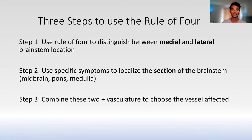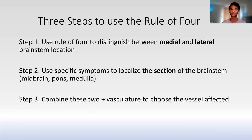To summarize: brainstem strokes are confusing, but if you separate medial versus lateral using the rule of four, then separate by level — midbrain, pons, medulla — and then identify which artery supplies that grid section, you can answer all of these brainstem stroke questions. Use it as an algorithm on your exams. Hopefully that helps — see you in the next one.